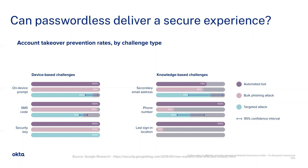This slide shows some early proof around the usefulness of passwordless factors. Google's survey found that passwordless authentication using security keys — like a YubiKey, or a YubiKey with a biometric in more modern days — is better than all device and knowledge-based factors at stopping account takeover incidents. We'll also talk about why other factor types like SMS and email are less secure factors in a couple of minutes.